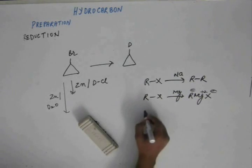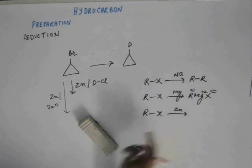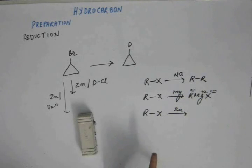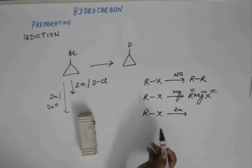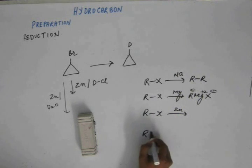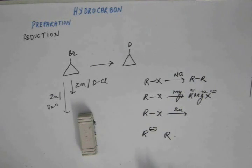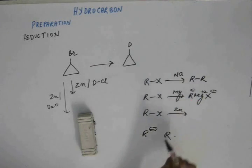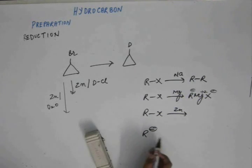If we add zinc to this, as we have seen in the last reaction, zinc is also a divalent metal. So zinc will also release two electrons like magnesium. So that will also form R- directly instead of R·. So there will be no dimerization as we have in case of Wurtz reaction when we add sodium. So the reaction would be you will have R- as you have in case of magnesium.